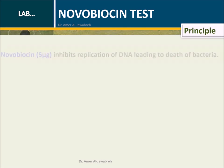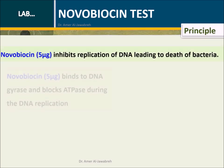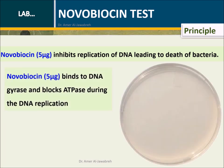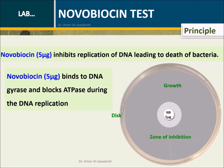Principle: Novobiocin inhibits replication of DNA, leading to death of bacteria. Novobiocin binds to DNA gyrase and blocks ATPase during the DNA replication.